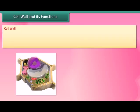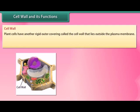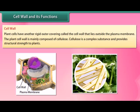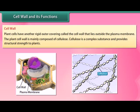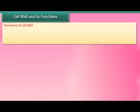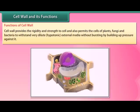Plant cells have another rigid outer covering called the cell wall, which lies outside the plasma membrane. The plant cell wall is mainly composed of cellulose, a complex substance that provides structural strength to plants. The cell wall provides rigidity and strength to the cell and also permits the cells of plants, fungi, and bacteria to withstand very dilute hypotonic external media without bursting, by building up pressure against it.